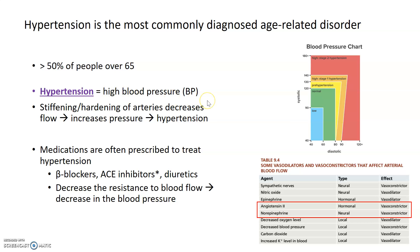When we have a vague definition like high blood pressure, we have to establish some parameters for what that means. Normal blood pressure is somewhere in the range of 120 for the systolic, or the top number pressure, over 80, which is the diastolic pressure. So 120 over 80 and anything below that is considered normal blood pressure. Anything above 130 over 90 is considered hypertension.